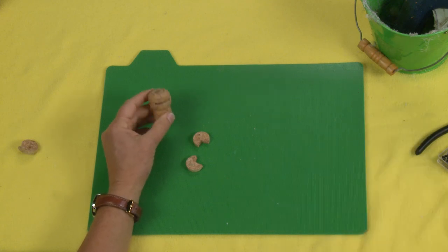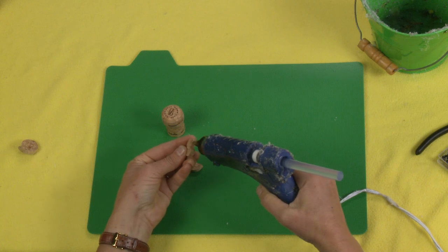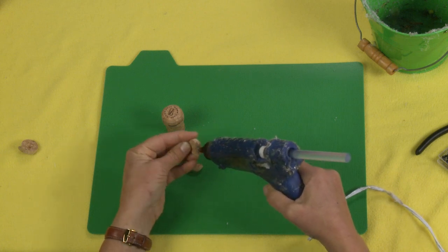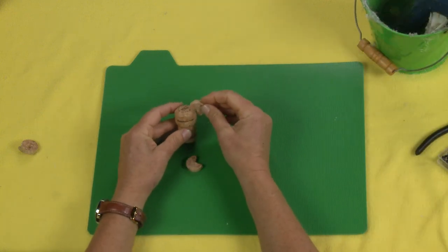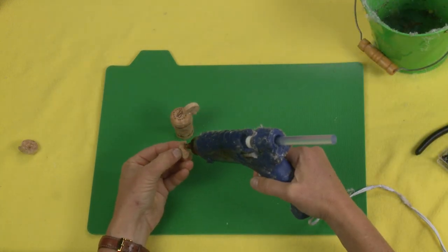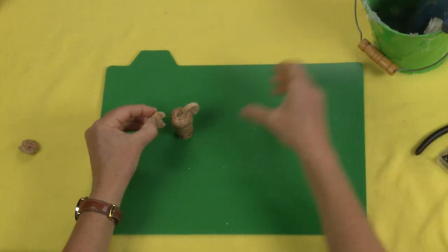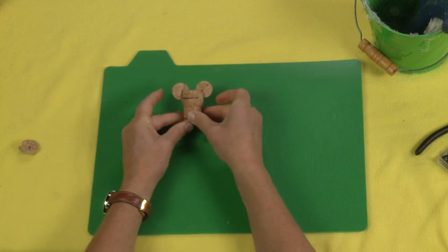Then take your champagne cork and a little bit of hot glue, put the glue on the Pac-Man mouth, and just place it on your champagne cork. Repeat on the other side, and let that dry really, really good. There you go.